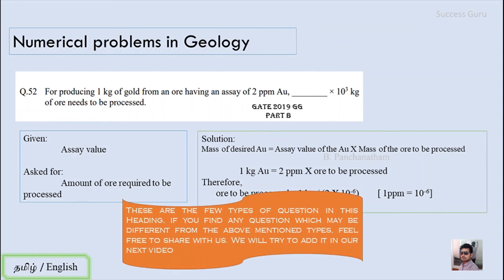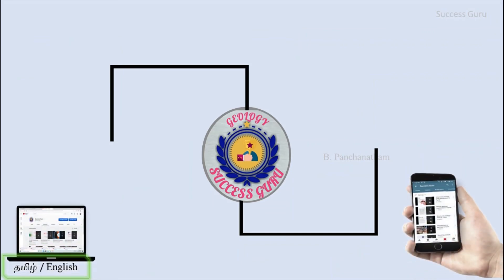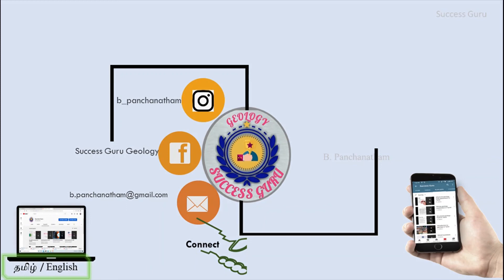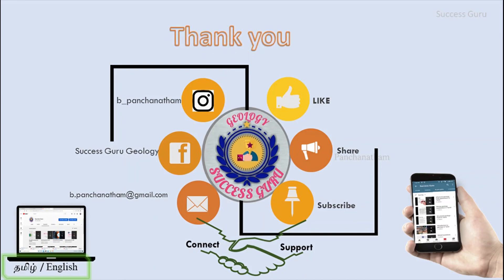These are the main types of questions under this heading. If you find any question different from the above-mentioned types, you can discuss with us in the comment section and we will do a separate video for that. There are 4 types of questions in this heading that we have already solved. I think this is sufficient for Economic Geology. You can connect with us by mail, Facebook, and Instagram. Please support us by like, share, and subscribe. Thanks for watching — have a great day.